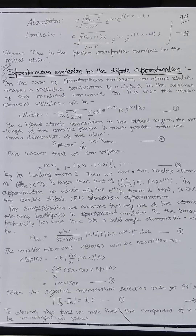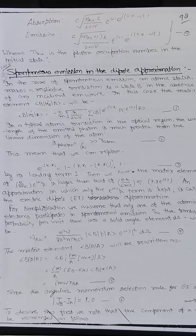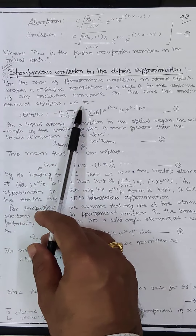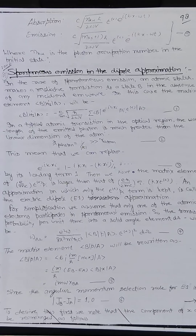The second topic is spontaneous emission in the dipole approximation. In the case of spontaneous emission, an atomic state |a⟩ makes a radiative transition to state |b⟩ in the absence of any incident electromagnetic wave. The matrix element ⟨b| H' |a⟩ is given by: -e/m · √(ℏ / 2ωV) · Σ_i ⟨b| e^{-ik·x_i} p_i · ε_α |a⟩.